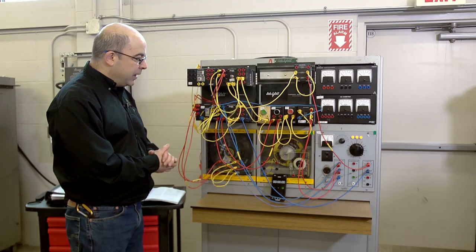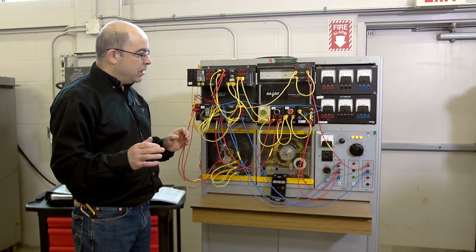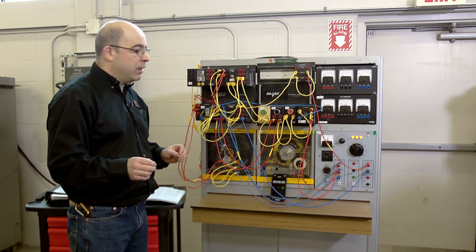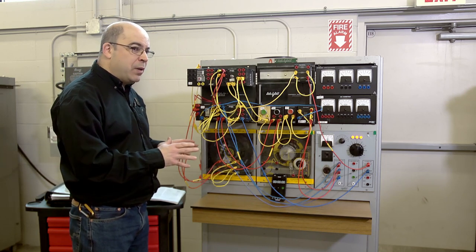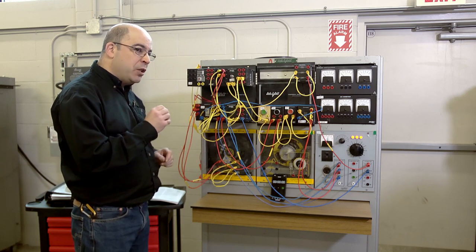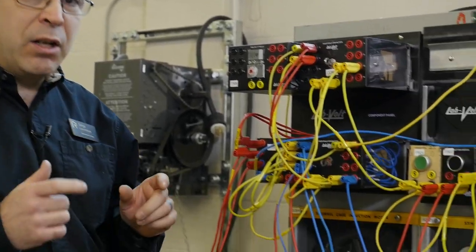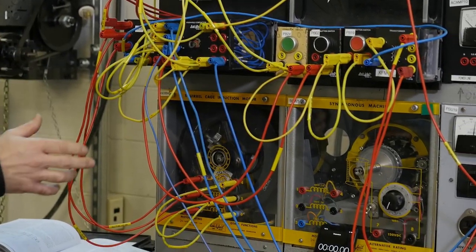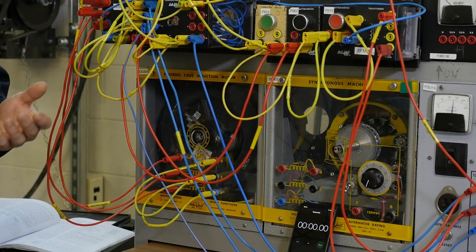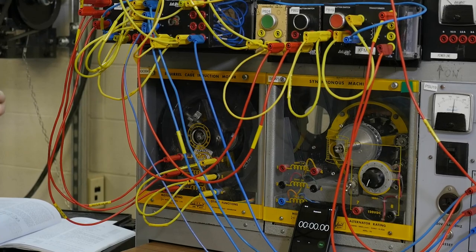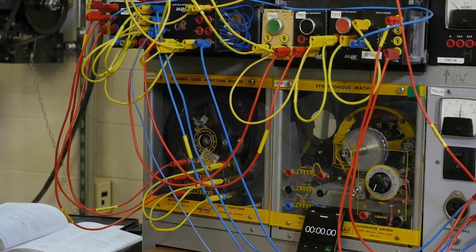This next segment we're going to highlight a concept known within the trade as an eddy current brake. This demonstration I've got set up uses a squirrel cage induction motor. I have an inertia wheel tied onto it to demonstrate that when we have built up inertia, a motor will take an awful long time to coast to a stop.